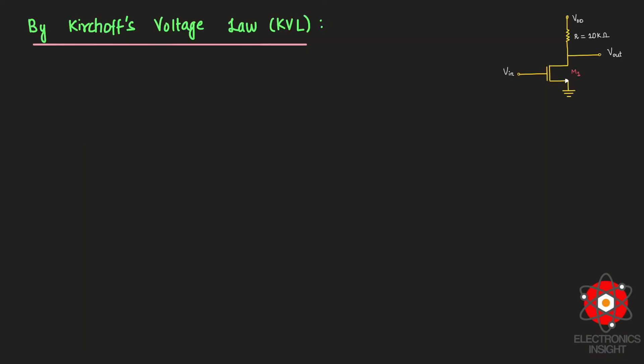By Kirchhoff's voltage law or by KVL, we know that the total voltage around a loop is going to be equal to the sum of all the voltage drops within the same loop. Therefore, if we are considering this particular circuit with one NMOS transistor along with a resistive load, we can write the equation as VDD = IDS × R.